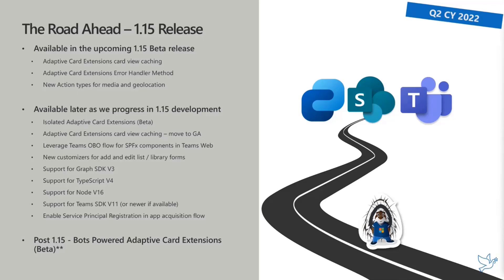We're aligning on library capabilities: Graph SDK 3, TypeScript V4, Node 16, and Teams SDK version 11. We're also aligning API registration to the app acquisition flow — today when you install an SPFx component that requires an unregistered multi-tenant API, you have to manually do an extra step. We're streamlining that by registering the service principal of your multi-tenant API at package deployment time, aligning with the Teams experience.